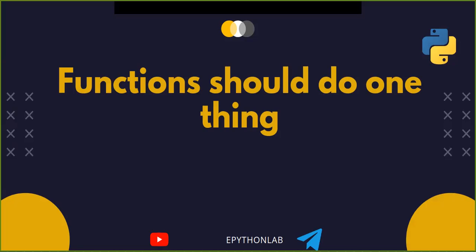You should use one thing per function. If a function is doing multiple things, it becomes difficult to generalize and reuse. Generally, if there is an 'and' in your function name, consider refactoring. Refactoring means restructuring your code to improve the internal functionalities without changing the external behavior — that is very important.